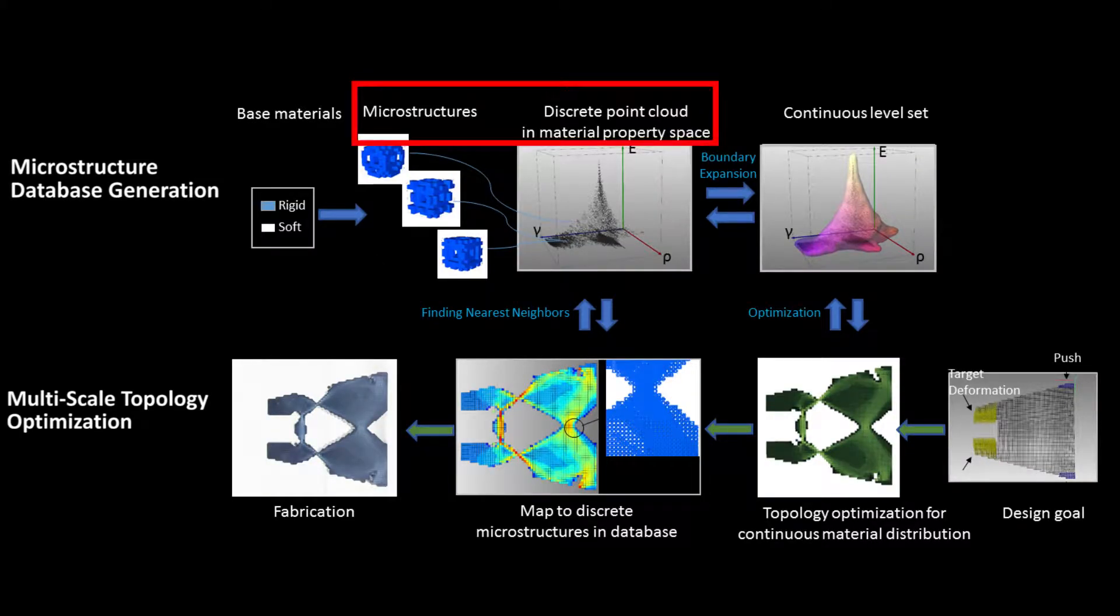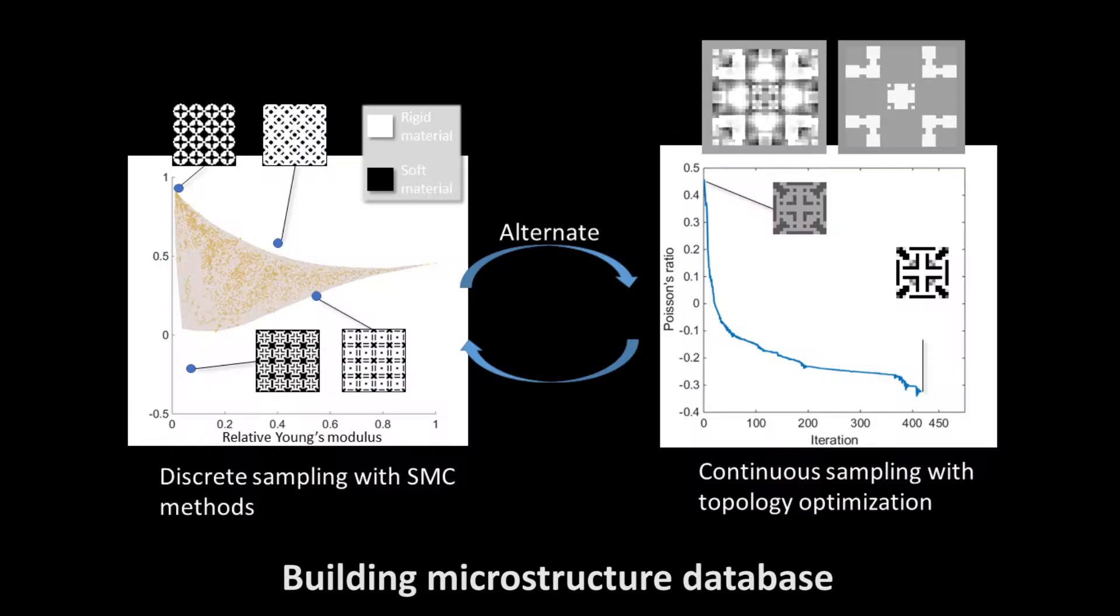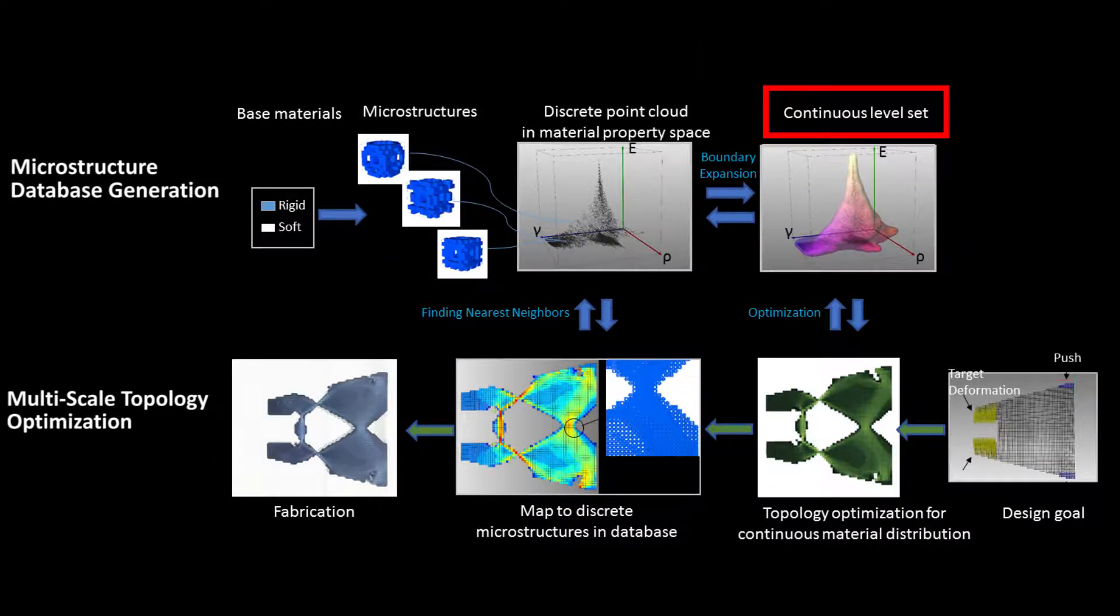Our system starts with two base materials and uses them to generate a database of microstructures by repeating discrete and continuous sampling steps. We build a continuous level set field from the point cloud.